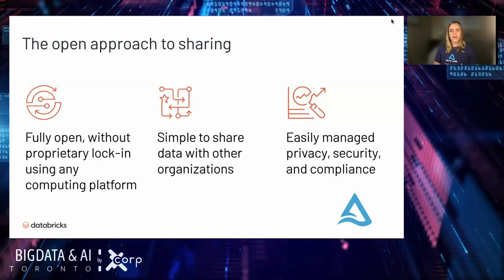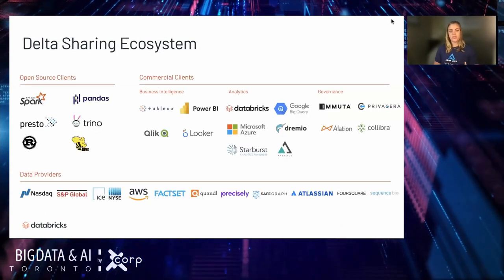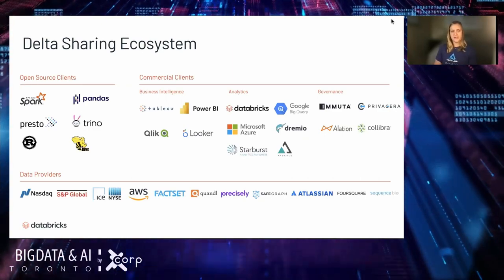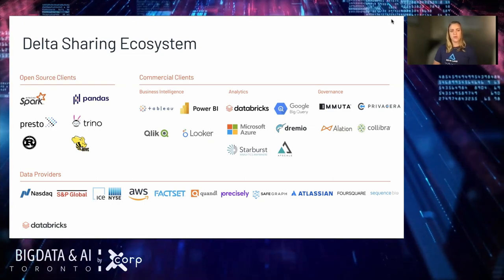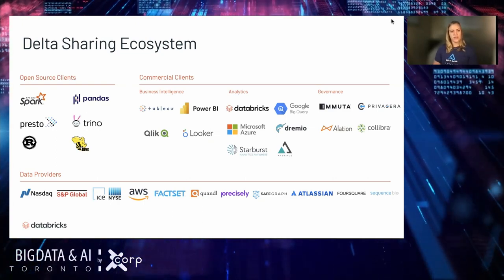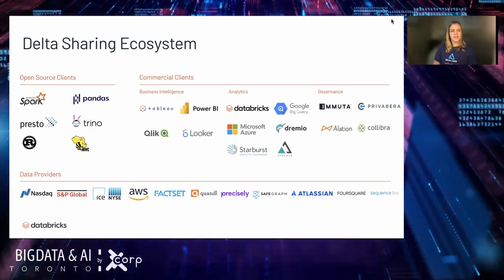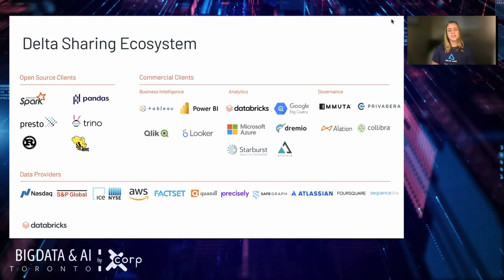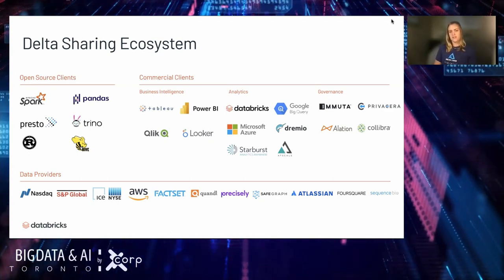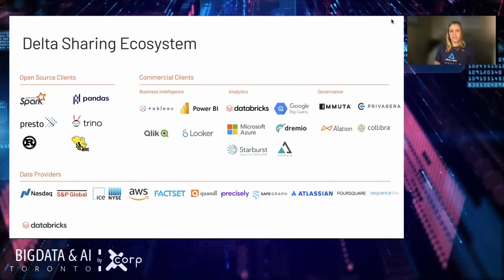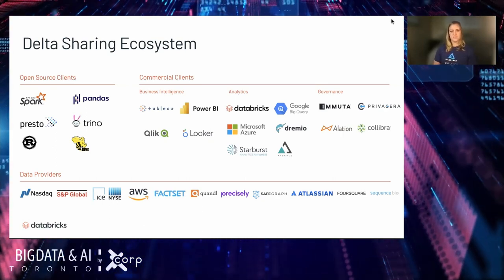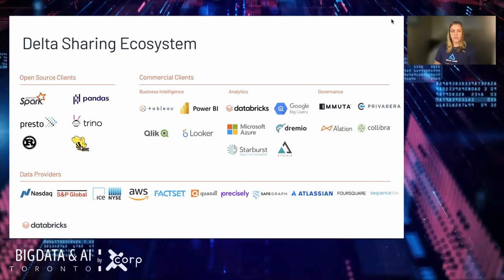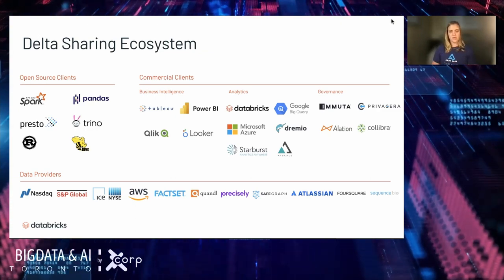Before I show you under the hood what it looks like, I just want to mention all the partners we are going to market with as we introduce Delta Sharing. Over in the top left are open source clients you'll be able to directly hook into a Delta share — namely Pandas, Presto, Hive, Apache Spark. In the demo we'll see how we ingest it with Pandas. On the commercial client side, focusing on BI tools: Tableau, Power BI, Looker, Click, Analytics Systems, Governance Partners. And at the bottom are all the data providers partnering with us to set up some of the first data shares.